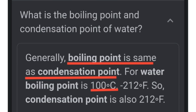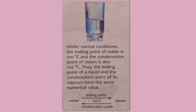What is the boiling point and the condensation point of water? Generally, the boiling point is the same as the condensation point for water. Boiling point is 100 degree Celsius, so condensation point is also 212 degree Fahrenheit or 100 degree Celsius. Under normal conditions, the boiling point of water is 100 degree Celsius and the condensation point of steam is also 100 degree Celsius. On heating, the water changes into steam; on cooling, the steam changes into water — but the temperature at which this transition takes place is the same, that is 100 degree Celsius.